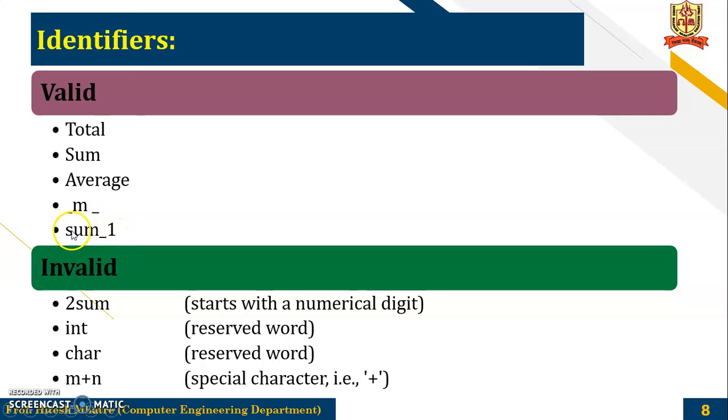So starting with character underscore and then you can have a number. Now here are some examples of invalid identifiers like 2sum. Why it is invalid? Because it starts with a numerical digit. Then int. Now this is a reserved word, that is a keyword. So we cannot use this. Char. Again, this is a reserved word. So we cannot use this. m plus n. Now here the special character that is plus is included. So again, you cannot use this because only special symbol allowed here is underscore.